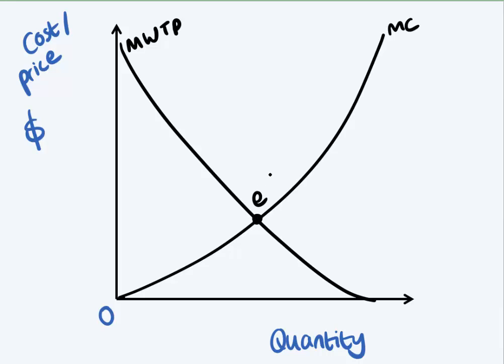Now what we say here is the efficient level of output would be where these two intersect. So I'm going to call this efficient level of output equilibrium star, and here I have a price or cost of P star and the quantity output of Q star. This is basically the most social efficient rate of output.